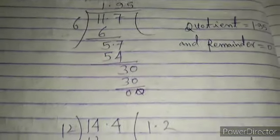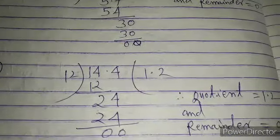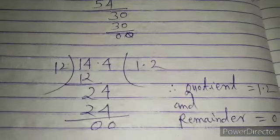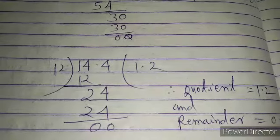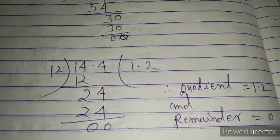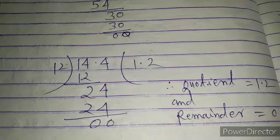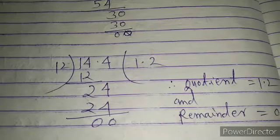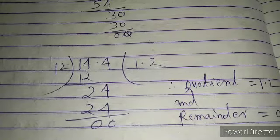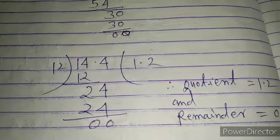When 14.4 is divided by 12: 12×1 is 12, subtracting from 14 gives remainder 2. We bring down 4 to make 24. 12×2 is 24, remainder becomes 0. So there is no need to add a 0. The quotient is 1.2 and remainder is 0.